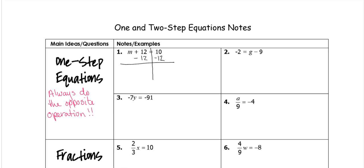And then a positive 12 minus 12 gives us 0, so that cancels out. Your M gets brought down. And then 10 minus 12 is negative 2. So that is our answer.